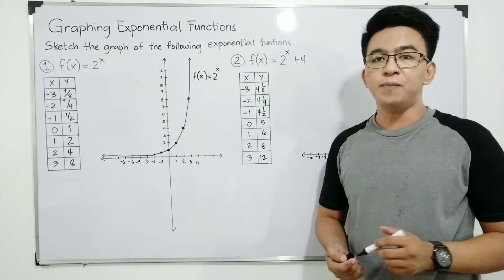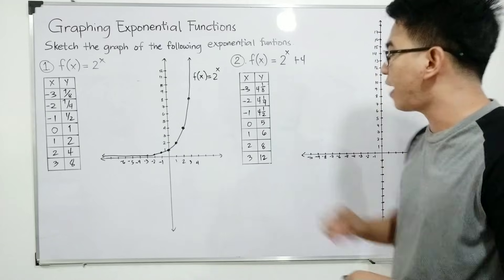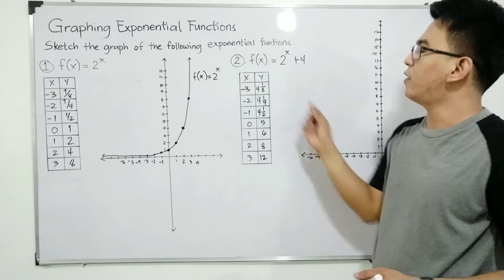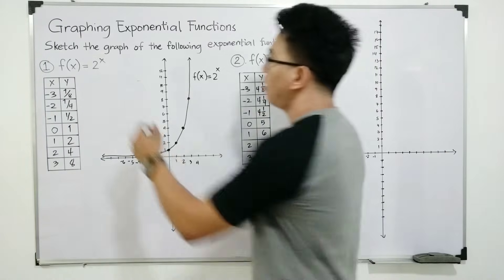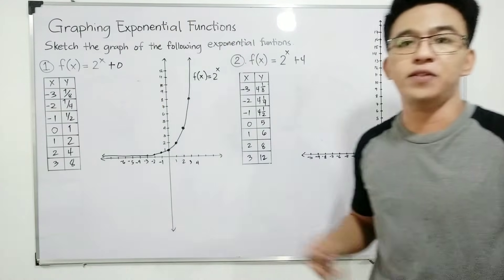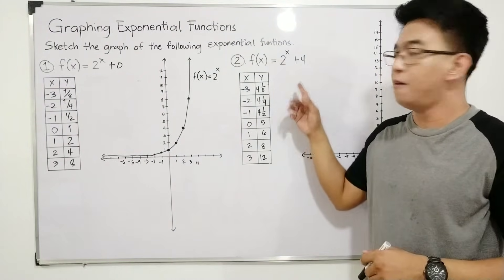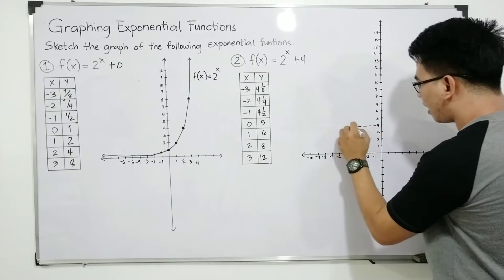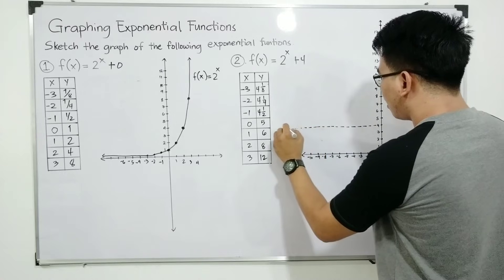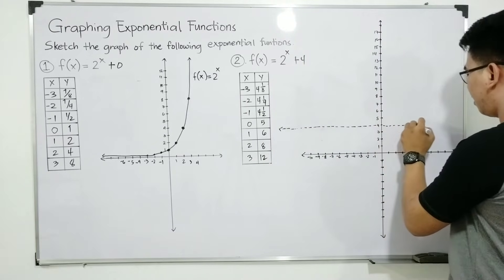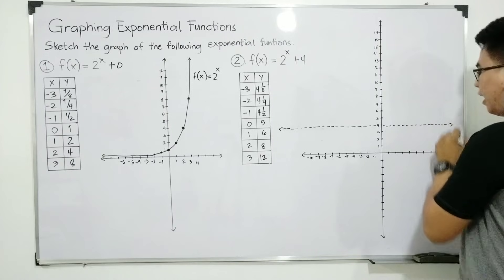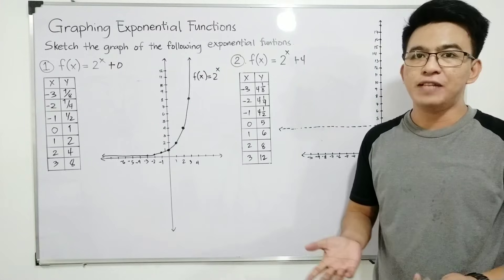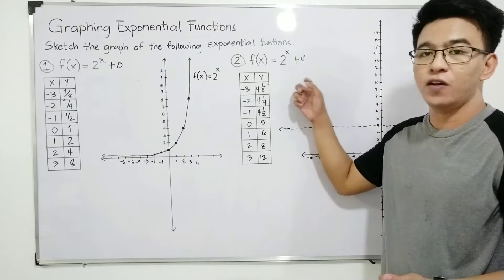Now as you can see guys, we have completed the table of values. Now we are ready to graph. Sir, ano pong nagkaiba nito? Ito kasi yung pinagkaiba nito — since ito, yung mayang plus 0, the asymptote is equal to 0. Dito naman meron syang asymptote na plus 4. That's why ito yung ating asymptote. Hindi ito ma-reach or matotouch nung mismong graph na natin ng exponential function nito.